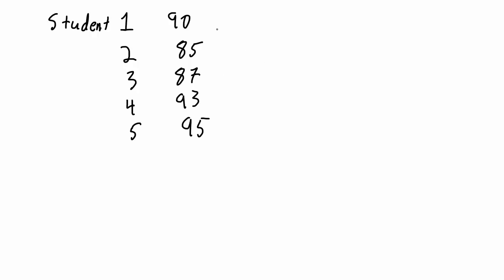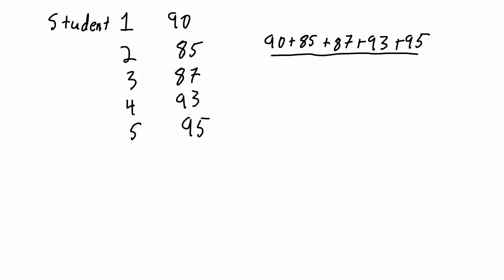Amongst all these high achievers, we want to figure out what is the average. These are five discrete different values, so all that we do is take each one of the values — 90, 85, 87, 93, and 95 — and just add them all together. That gives us a sum total, and then we divide by the total number of discrete things, in this case five different students. Adding all those numbers up and dividing by five gives us an average of 90%.